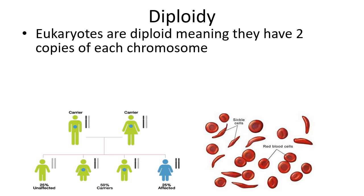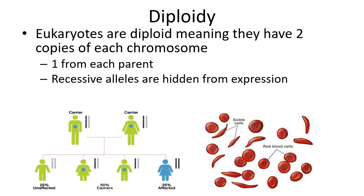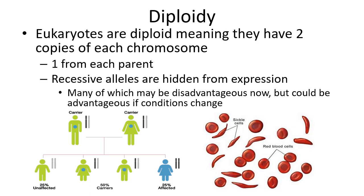Eukaryotes are diploid and participate in sexual reproduction, so genes are reshuffled in meiosis and fertilization. Recessive alleles are often hidden from expression and can remain carried in individuals — perhaps becoming more advantageous as the environment changes later. An example is sickle cell anemia, which confers some advantage in areas where malaria is present.